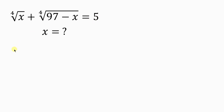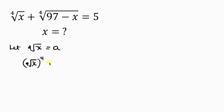Our first step towards solving this question is to let the fourth root of x be equal to a. To get rid of this radical, we raise both sides to the power of 4. The power of 4 cancels the fourth root, leaving x equal to a to the power of 4.